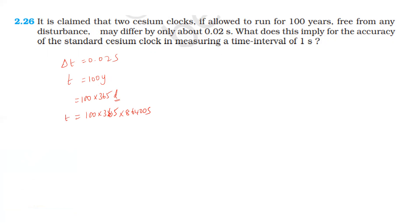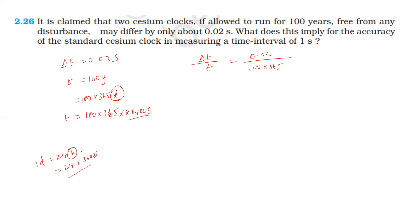The error in one second is 0.02 divided by the total seconds in 100 years. Total seconds: 365 days times 24 hours per day times 3600 seconds per hour. One hour is 60 minutes, one minute is 60 seconds, so one day is 86,400 seconds.